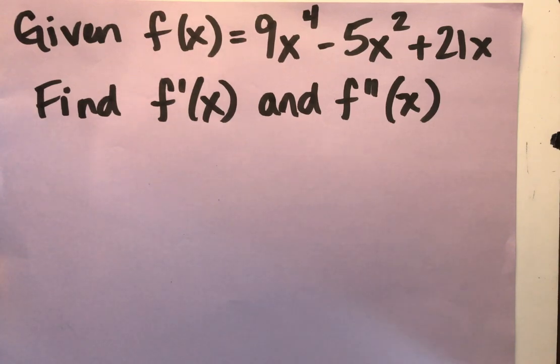We've got f of x is 9x to the fourth minus 5x squared plus 21x. If you notice, the directions ask us to find f prime x and f double prime of x. So we're going to take derivative once, and then we're going to take the derivative a second time, taking the derivative of the derivative.